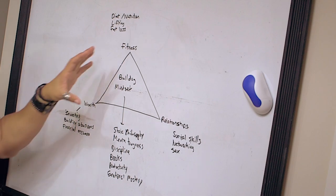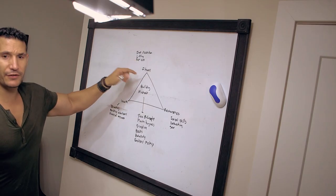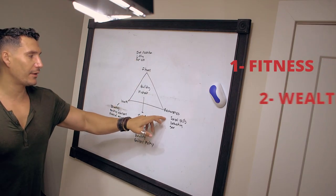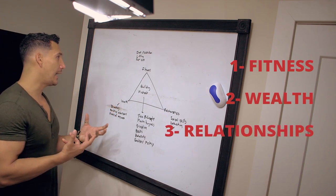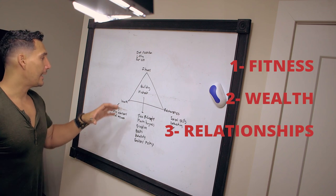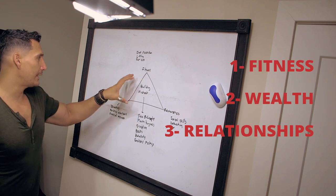I have this triangle here with three points. One of them is fitness, one of them is wealth, and one of them is relationships. I believe these are the three things in life that we're seeking and that this bulldog mindset will get you.